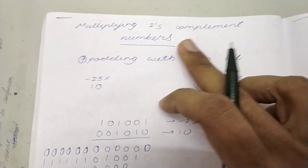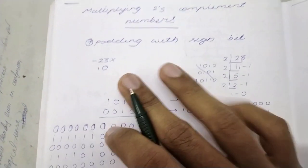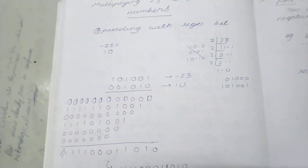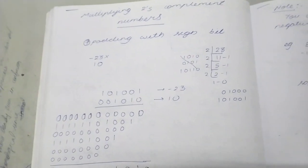Now this video is about multiplying 2's complement numbers. So the only thing you want to take care of here is padding with the sign bit.